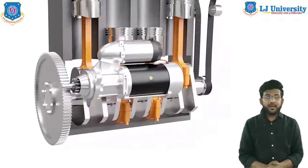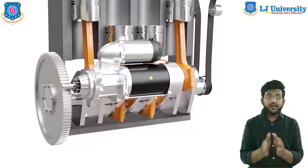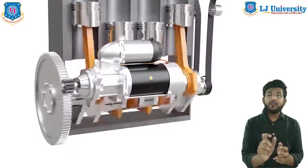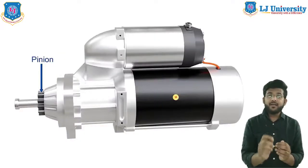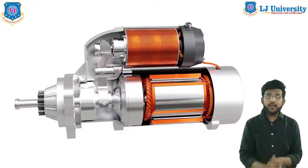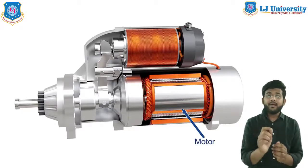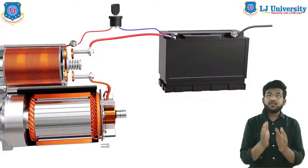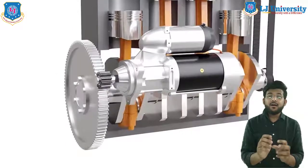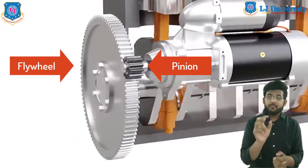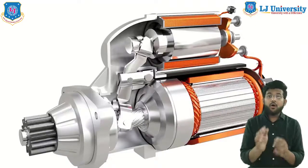Starter motors are direct current motors that use a great amount of current for a short time. The starter motor circuit is simple, containing just the starter motor and the solenoid or relay — a direct path for delivering the momentary high current required from the battery. The starter motor cranks the engine through a pinion gear that engages a ring gear on the engine flywheel. The pinion is small; the flywheel is bigger.